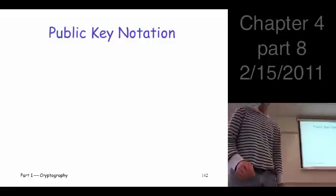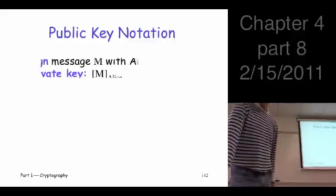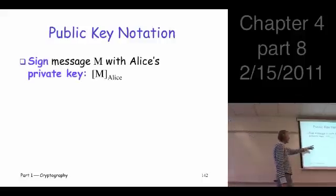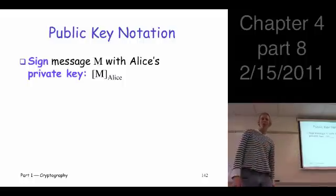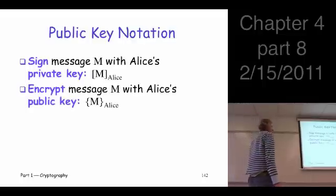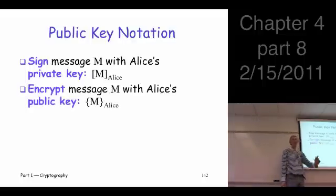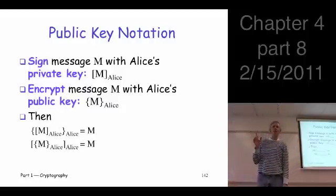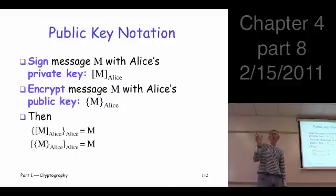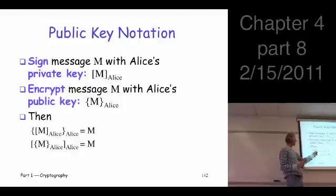Sign and encrypt versus encrypt and sign. So, first, just a quick reminder of the notation. I think we already covered this. The square bracket tells us it's a private key operation. Subscript tells us whose private key. The curly brackets tell us it's a public key operation. And, again, the subscript tells us whose public key. And they're inverse operations, as long as it's the same pair of keys.